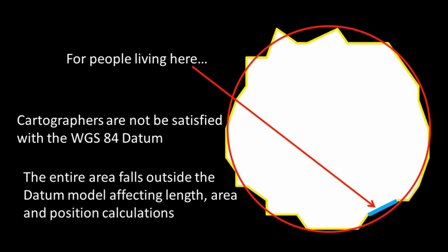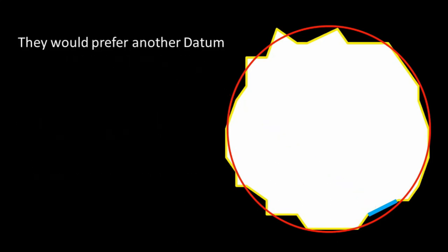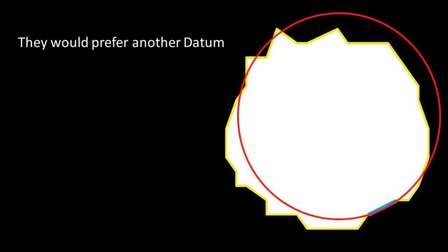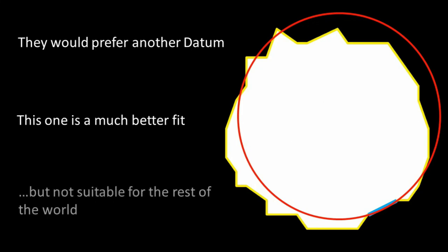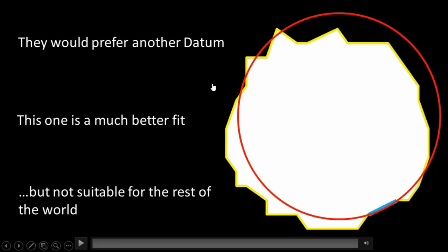But why? For people living here in the blue marked area are not satisfied with the WGS 1984 datum. The entire area falls outside the datum model, affecting length, area, and positions. They would prefer another datum like the red mark datum. This one is a much better fit but not suitable for the rest of the world. This type of imaginary Earth surface is called datum. It is a reference by which we can locate a place on Earth uniquely.